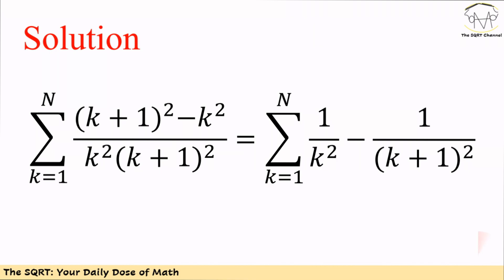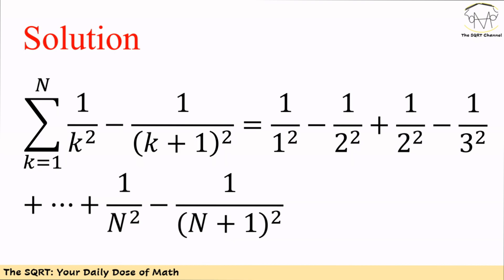We now proceed with some more simplifications. We write the expression inside sigma as two terms: 1/k² minus 1/(k+1)². As you can see, if we expand the sum, we are going to end up with several terms that cancel each other out. For example, 1/2² cancels out, then 1/3² cancels out. If we continue this approach, we are going to end up with just two terms — the first term and the last term.